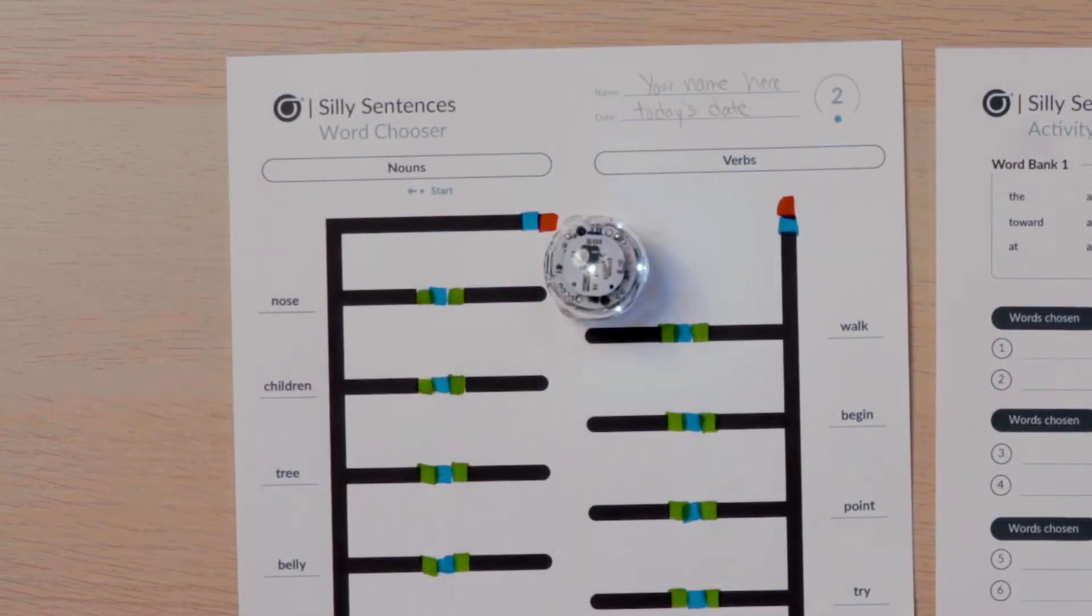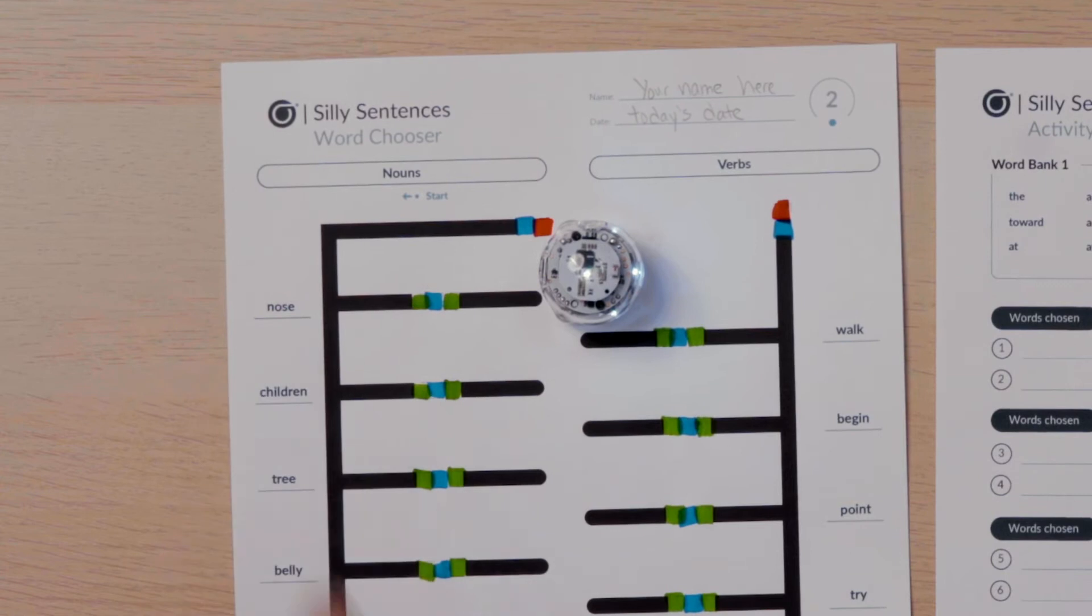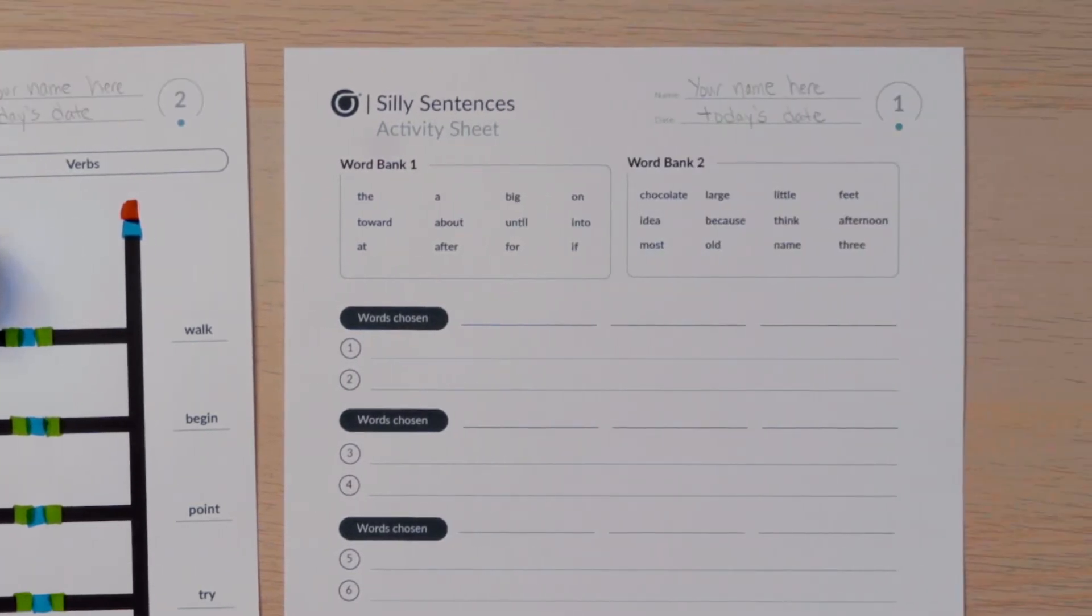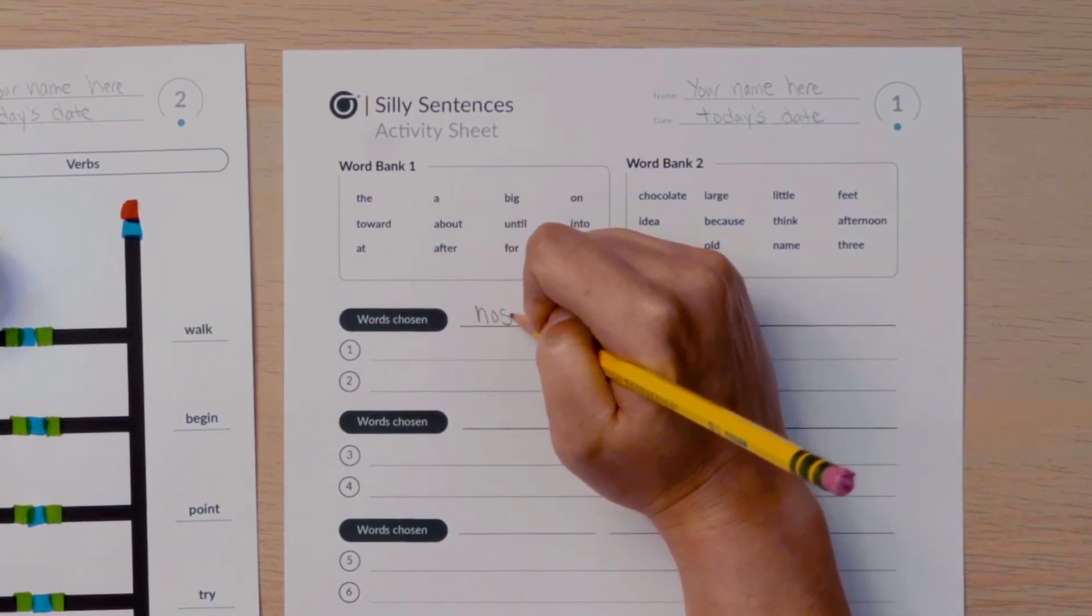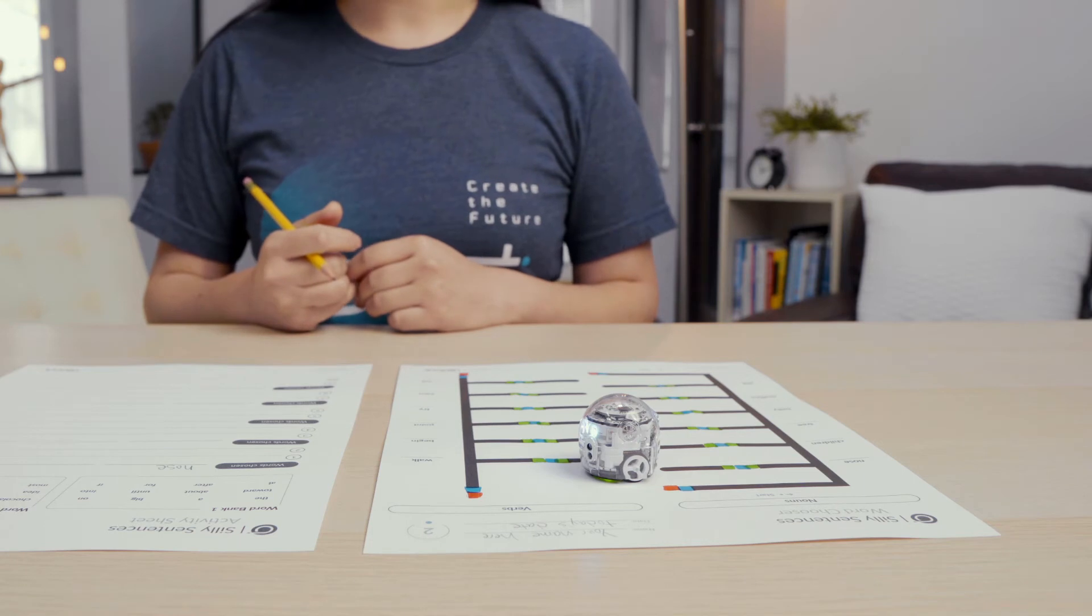My bot turned down nose. I will write nose on my activity sheet next to words chosen above lines one and two. My bot will then cross over to the verb side and randomly choose another line.